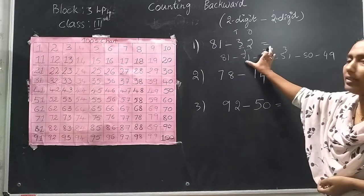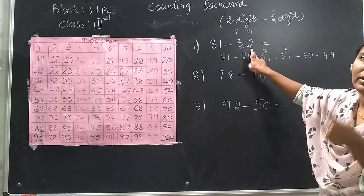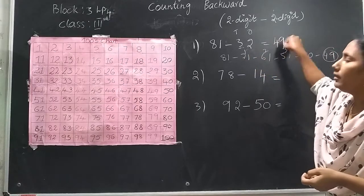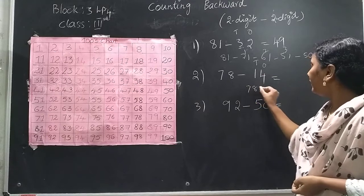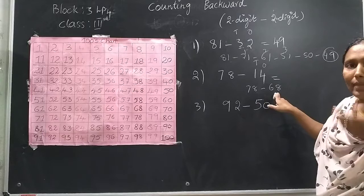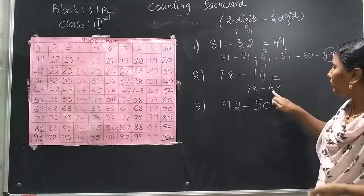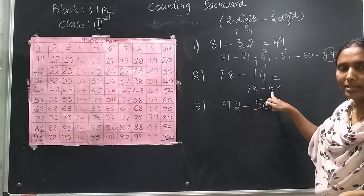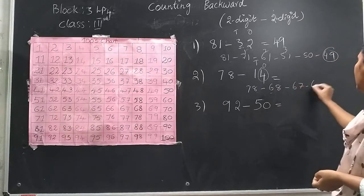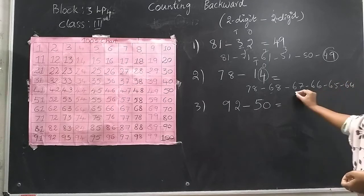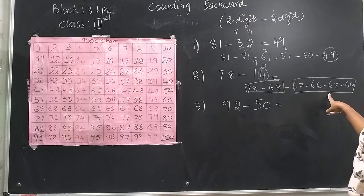81, 71, 61 — this is the 10's place. From 51, move backward 2 more steps: 51, 50 and 49. Because in the 1's place the difference is 2 numbers. So the answer is 49. Next: 78 minus 14. 1's and 10's place. In the 10's place I have 1, so move backward 1 step to 68. From 68, move 4 steps backward: 67, 66, 65 and 64. In the 10's place I moved 1 step, in the 1's place 4 steps. The answer is 64.